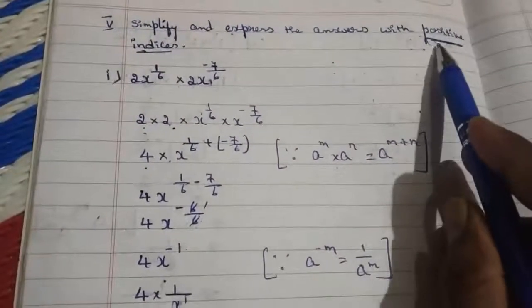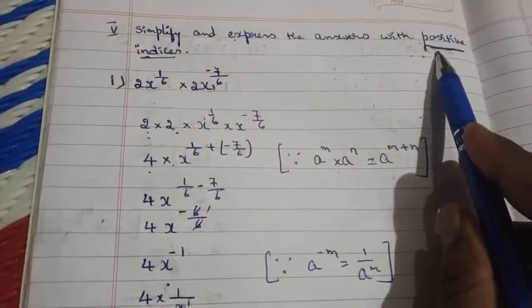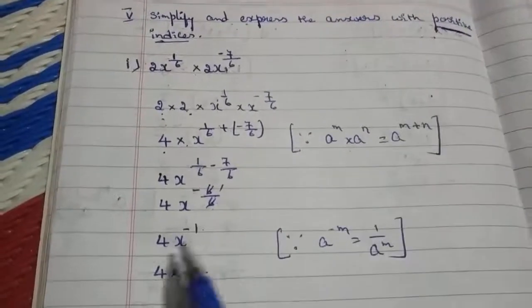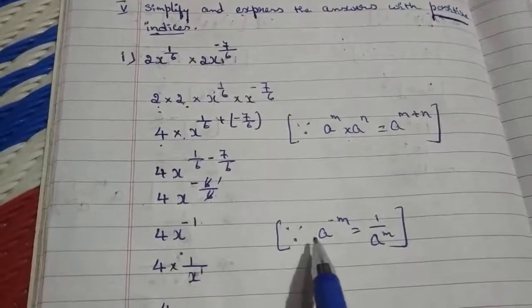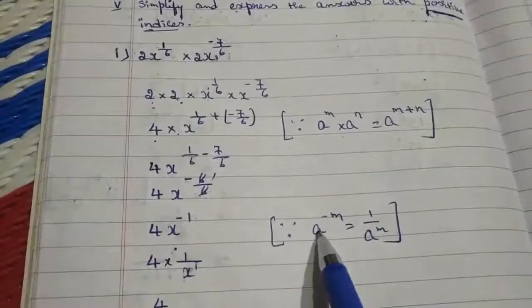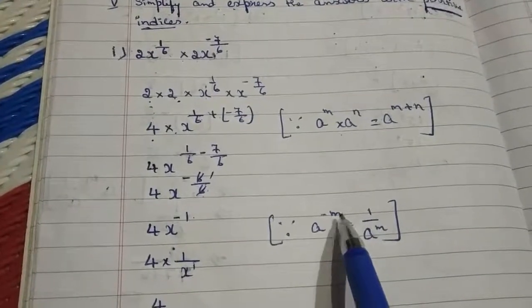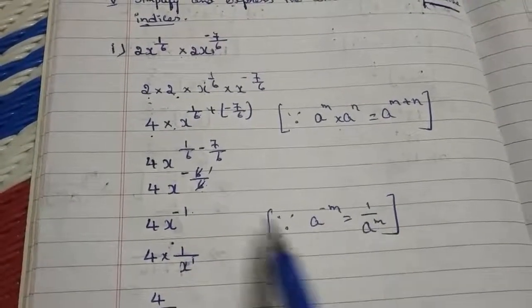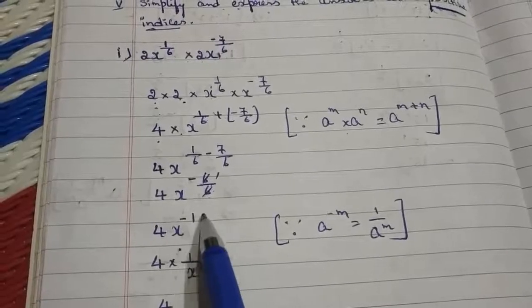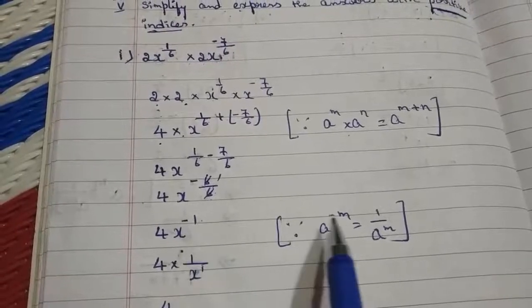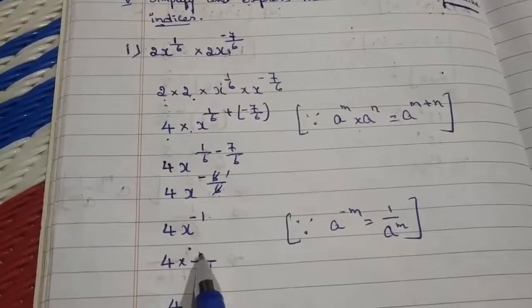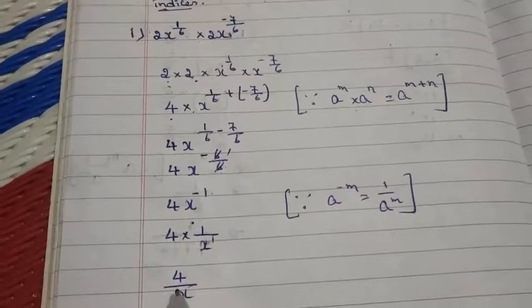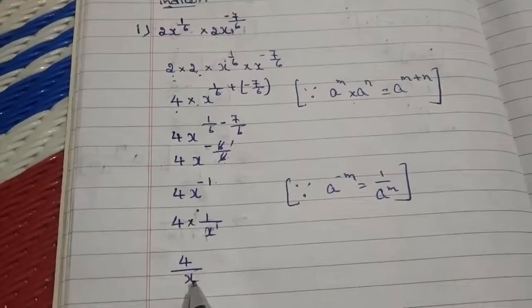Since the question asks for the answer in positive indices, we apply the law: a to the power of minus m equals 1 by a to the power of m. So we express x to the power of minus 1 in positive form as 4 into 1 by x, which is nothing but 4 by x.